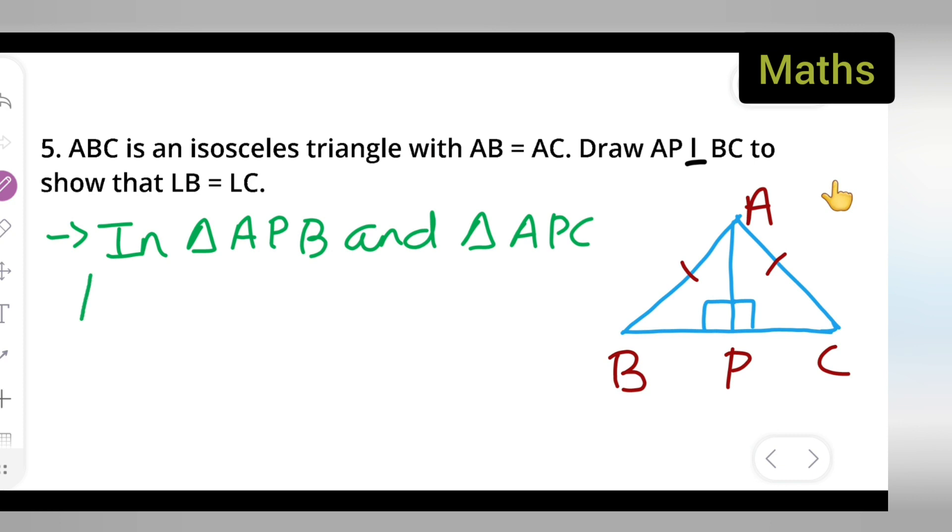Then I will write angle APB is equal to angle APC, reason will be each 90 degrees. I can see that here P is 90 degrees in both angles, it is common. So angle APB and angle APC, I am just marking so that you all understand it better.